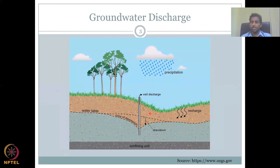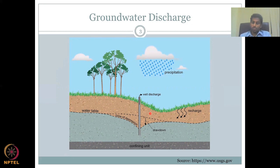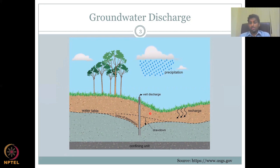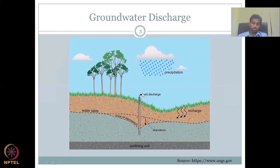Now we look at groundwater discharge — pumping or extracting water from the groundwater aquifer. Discharge can be of two types: forced discharge, where you put a pump and pull water out through energy or manual labor, or natural discharge, where groundwater discharges into a system on its own. You start to pull water out through your pump for agriculture, domestic use, livelihoods, or industry — but you are pulling the water table down.